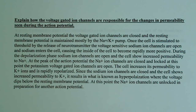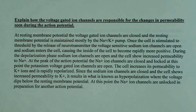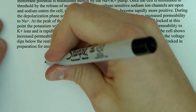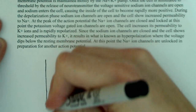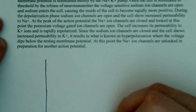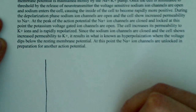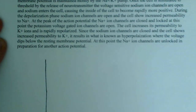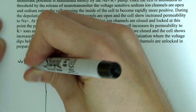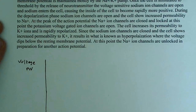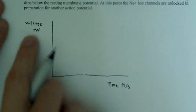The first thing I want to do is draw out a picture of the action potential and what's actually going on there. You can just draw out a little x and y axis — the x-axis is time in milliseconds, and the y-axis is voltage in millivolts.